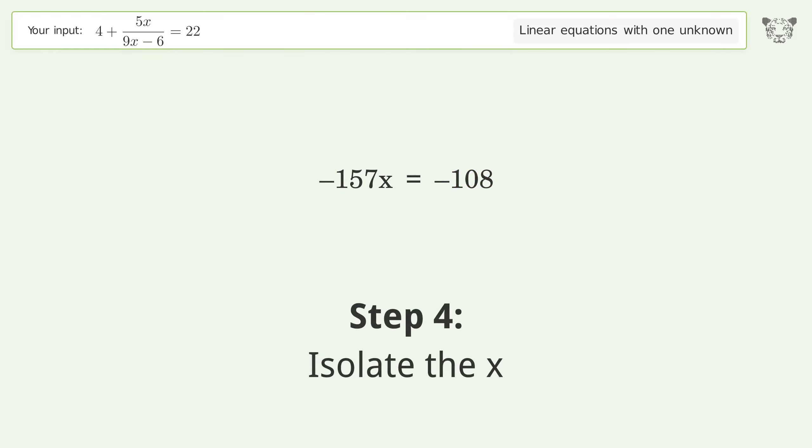Isolate the x. Divide both sides by negative 157. Cancel out the negatives.